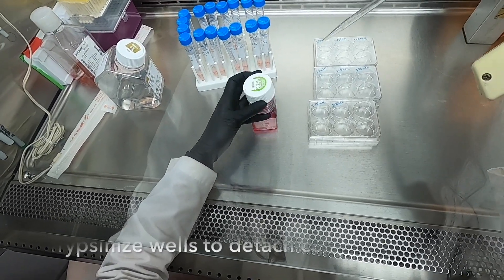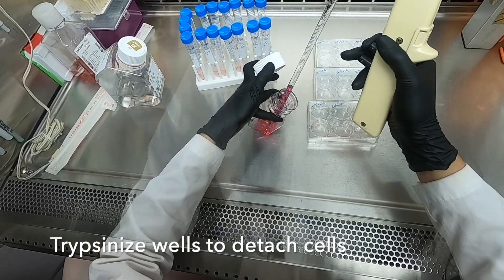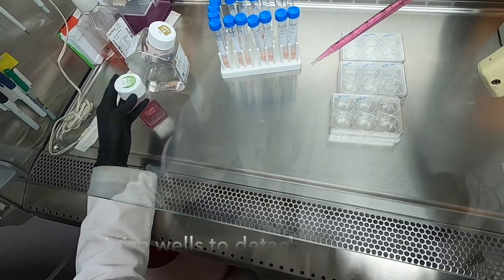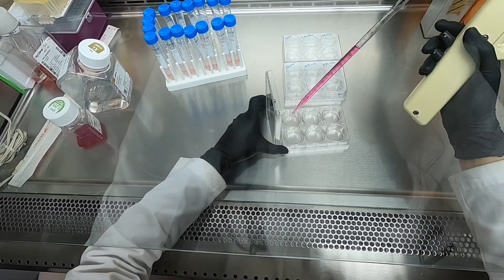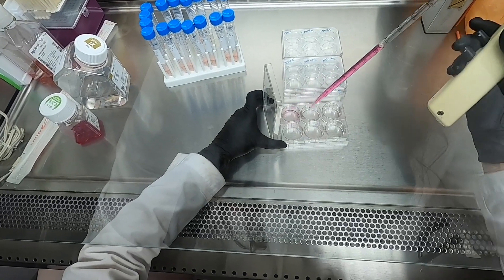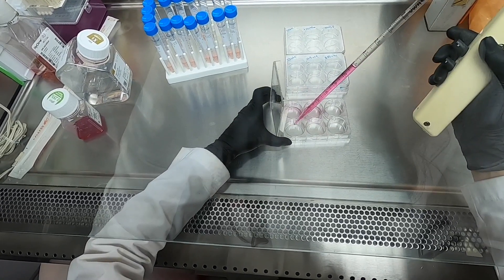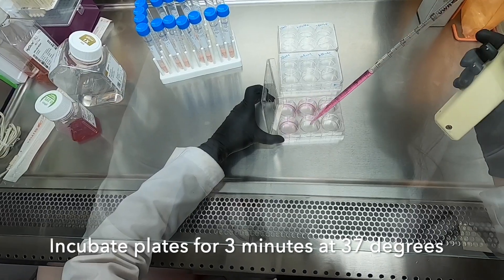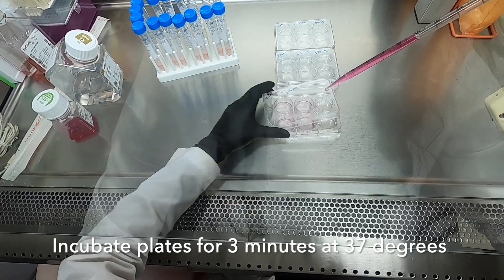Next, we have to harvest the cell from a plate. We do so by trypsinizing them with 1 ml of trypsin. We then incubate our plate at 37 degrees for 3 minutes in order to allow the trypsin to work.